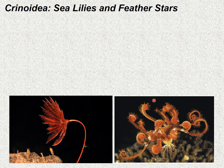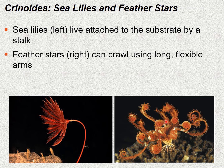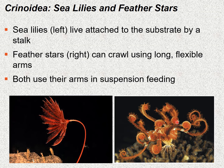Crinoidea include the sea lilies and the feather stars. They look very plant-like, but these are actually animals. Sea lilies are generally sessile and live attached to a substrate in the ocean by a stalk. Feather stars move around more freely and can crawl using long, flexible arms. Both use their arms to feed by suspension feeding.